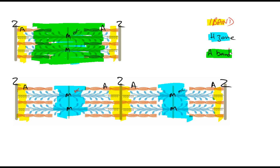So again when our sarcomere shortens our I-band will narrow. Our H-zone will narrow. But our A-band stays the same.